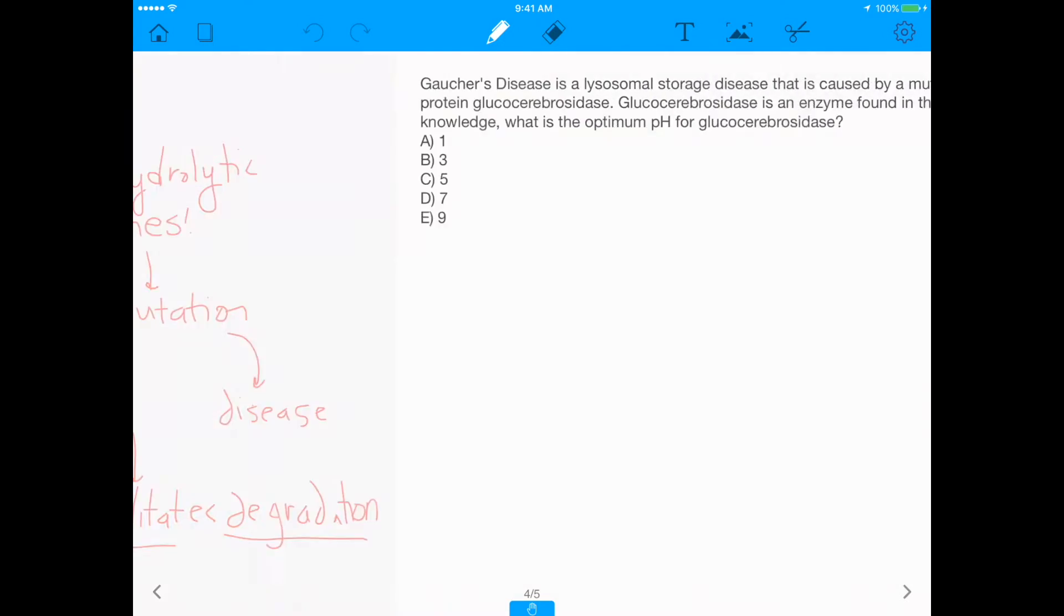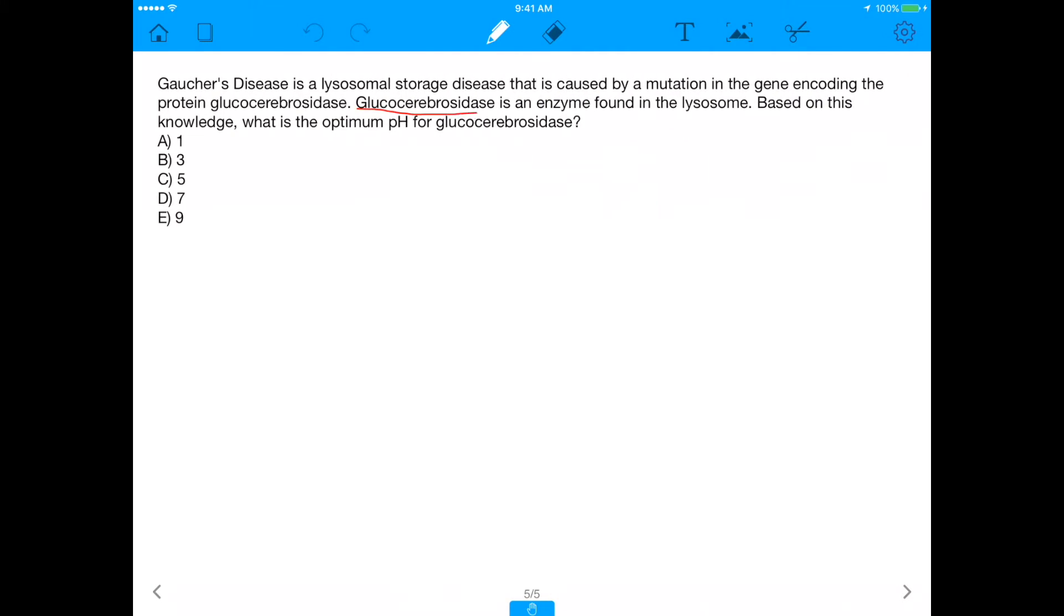But with that being said, what that also means is if we go back to our original question, the fact that glucocerebrosidase is an enzyme found in the lysosome, the fact that this enzyme literally lives its entire life in the lysosome and works in the lysosome to break things down means that it must be okay functioning in the lysosome. And if it's functioning in the lysosome, remember the lysosome has a pH of about 5. And therefore, the enzyme must also be optimally working at a pH of 5. Enzyme must function really well at pH 5. And that is actually the case. The optimal pH for glucocerebrosidase is 5.